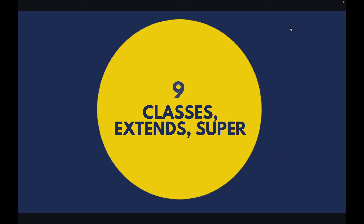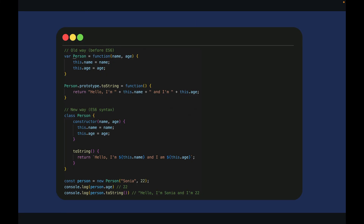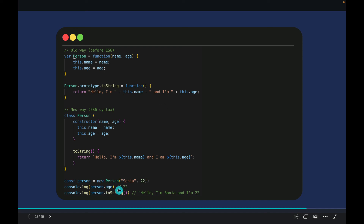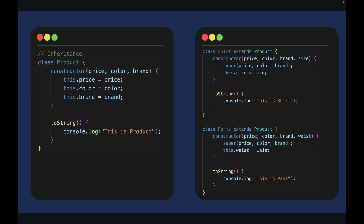Classes, extends, and super keywords. The old way of creating classes and objects in JavaScript used function constructors with properties, and all the methods went into a prototype object. With ES6 syntax we can use the class keyword to create classes with properties and methods, and create objects from classes using the new keyword to access different properties and methods. You can use inheritance in JavaScript to avoid duplicate code — with a product class having price, color, and brand properties, you can create shirt and pants classes using the extends keyword to reuse those properties while adding their own specific ones.